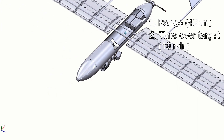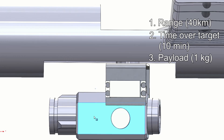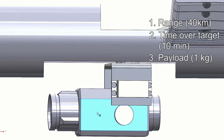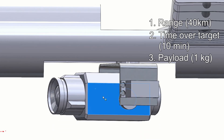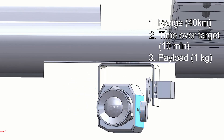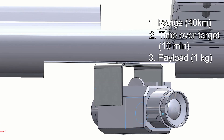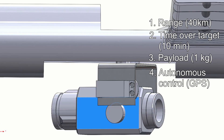Time over target: 10 minutes. Payload: let's say one kilogram. Actually, I have my little thermal device — maybe I'll use that as the payload. That would be rather interesting but not very smart because it's kind of bulky for a thermal. I should probably get a smaller camera. I'll want it to have autonomous control with GPS waypoints.